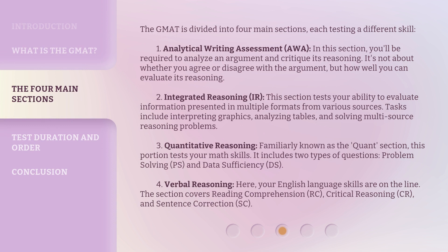The GMAT is divided into four main sections, each testing a different skill. First, Analytical Writing Assessment. In this section, you'll be required to analyze an argument and critique its reasoning. It's not about whether you agree or disagree with the argument, but how well you can evaluate its reasoning.